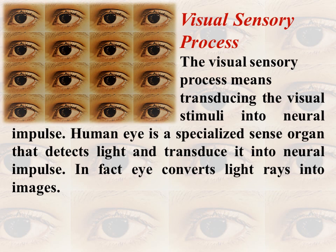The eye also converts that physical stimulus — light — into neural impulses, or into a language understood by your optic nerve. Physical light cannot travel through the optic nerve; only neural impulses can. For that reason, the eye is a beautiful medium that transforms physical stimuli into neural impulses, which then travel through the optic nerve to the specialized brain parts responsible for organizing and interpreting them.